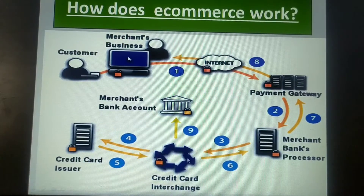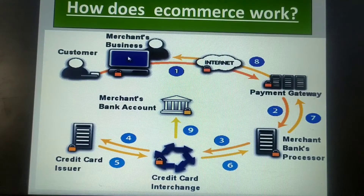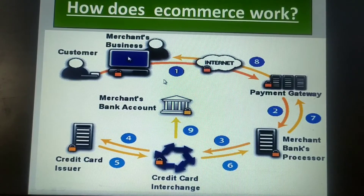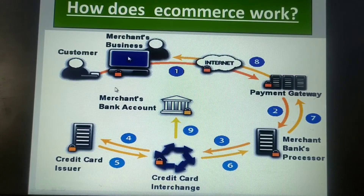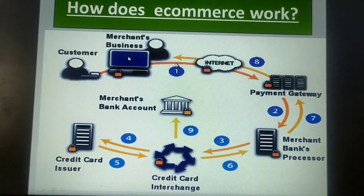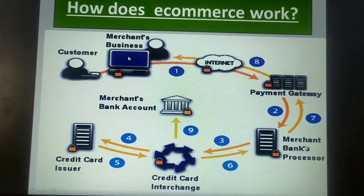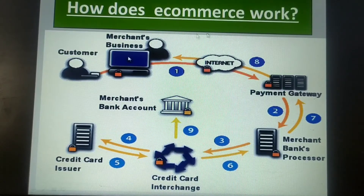This e-commerce example I am going to explain is about whenever you make an online payment — if you purchase any product and when you are making an online payment through a credit card transaction, then certain various steps have been included. Almost 9 steps have been included. When you make a transaction through the card, who are the entities involved, and how your credit card details are carried to the merchant's bank processor — that means the owner. Merchant is nothing but the shopkeeper.